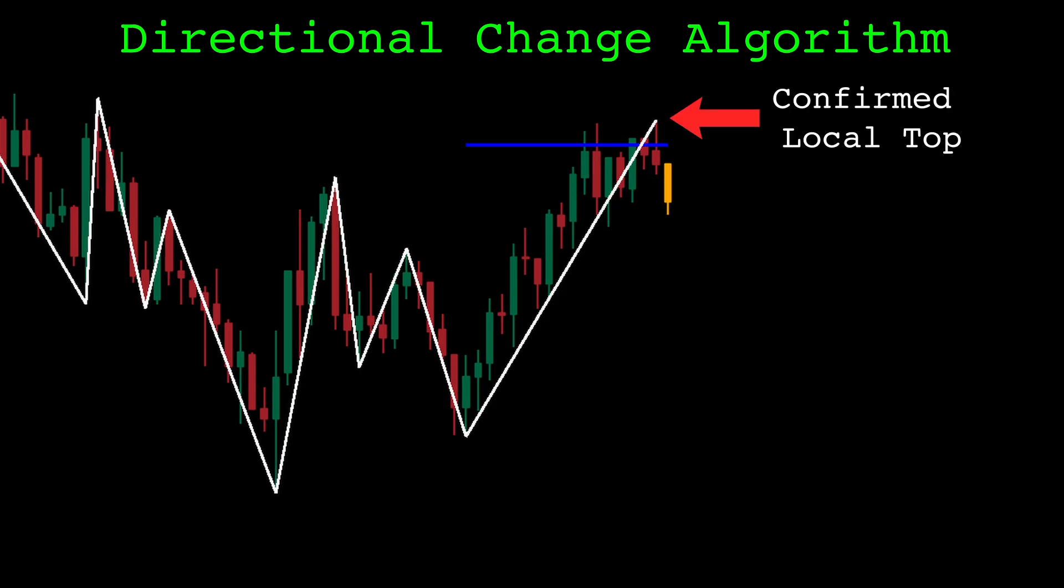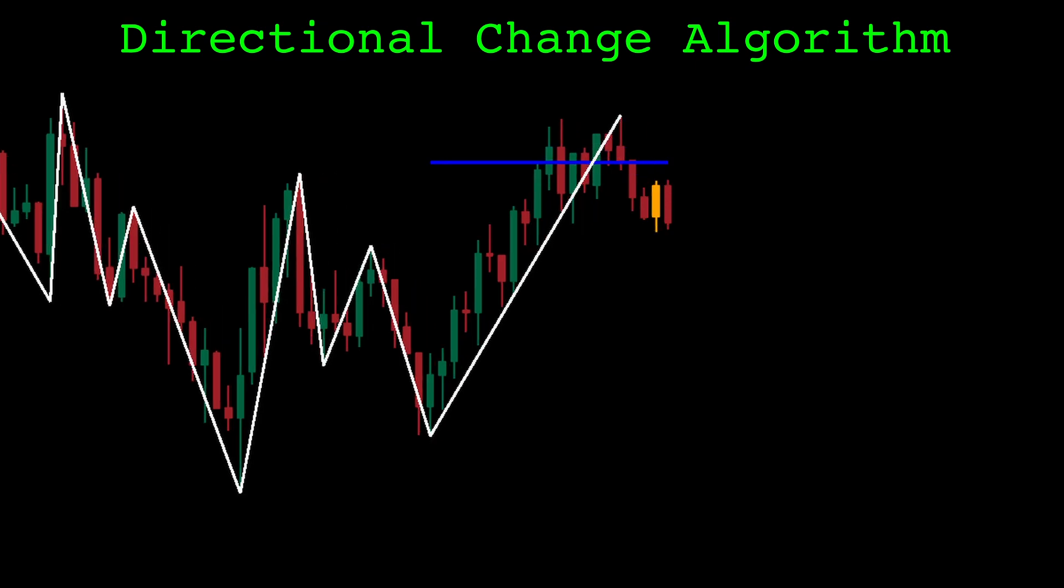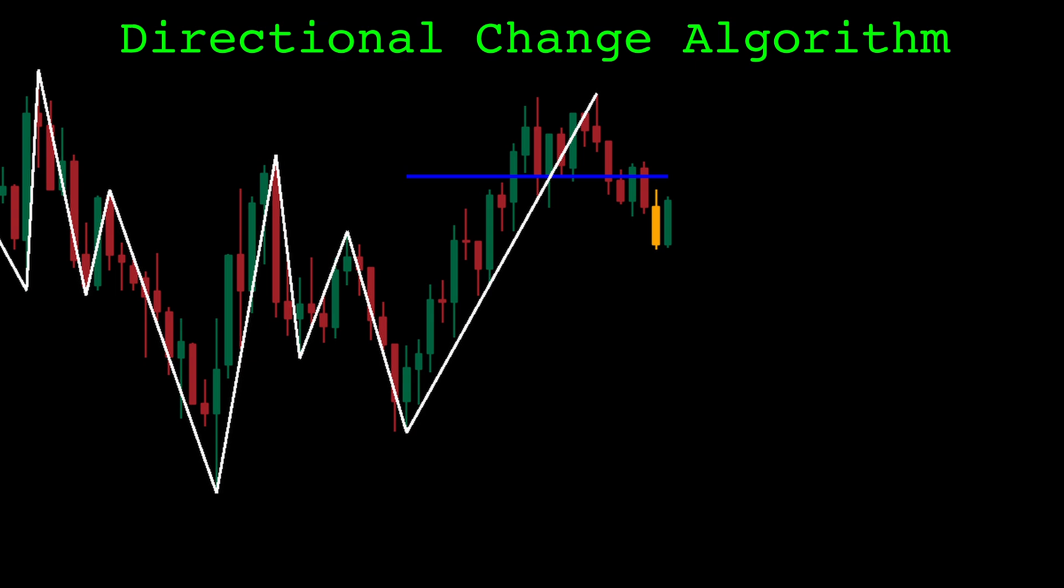Now that we've confirmed this top, we have a new orange candle. It is the lowest low since our confirmed top. This blue line is our new confirmation line. It is 3% above the low of the orange candle. Once the price closes above the blue line, the bottom is confirmed and the process repeats.